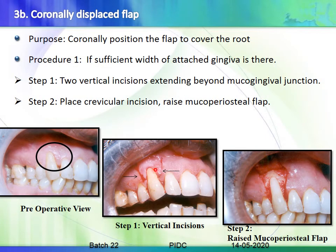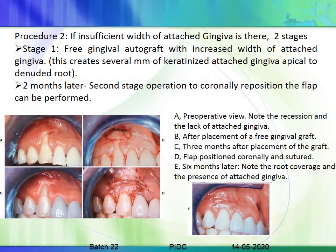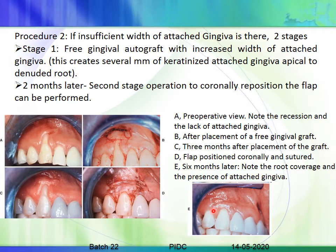For the coronally positioned flap: a crevicular incision is made, a full thickness mucoperiosteal flap is raised, the root surface is scaled and planed, then the flap is moved in a coronal direction and sutured. A periodontal dressing may be given. Post-healing shows an increased width of attached gingiva. After three months, a second procedure is performed placing the graft slightly more coronally, sutured with gut suture, correcting both the recession and the attached gingiva.